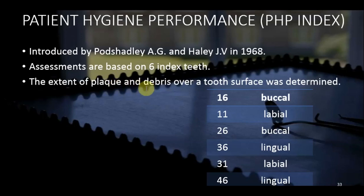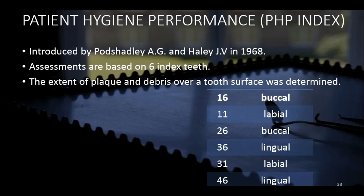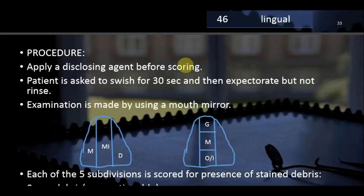Plaque is not visible to the naked eye — only debris is. To make plaque visible, we need to apply a disclosing solution. The procedure begins by applying a disclosing solution. The patient swishes for 30 seconds with any plaque-disclosing agent and then expectorates but does not rinse.